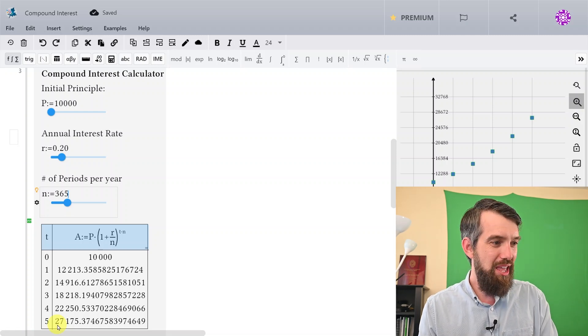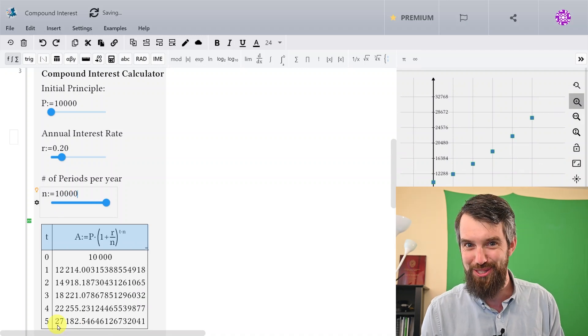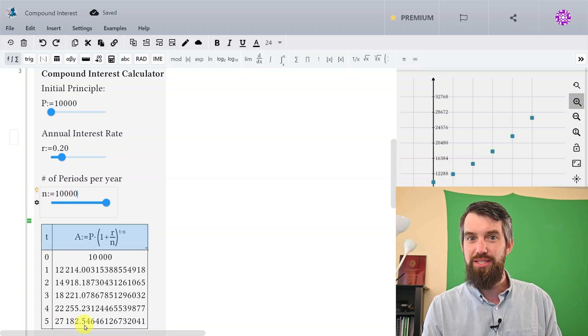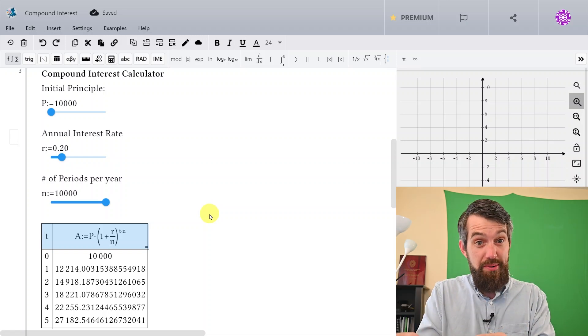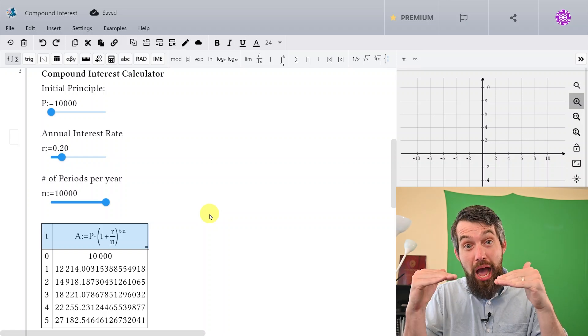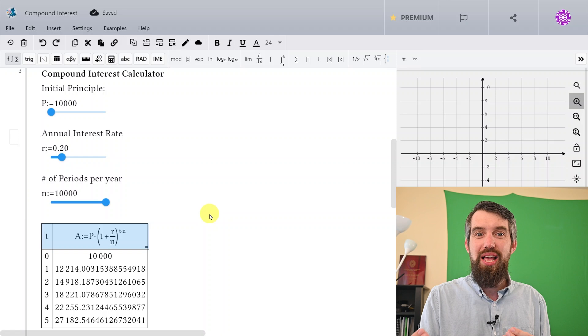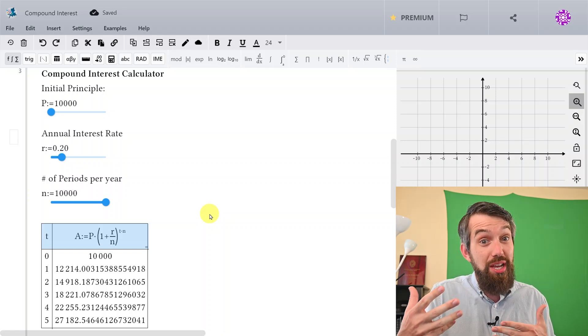And in fact, if you wanted to go kind of extreme and say, I don't know, how about 10,000 divisions per year, it actually barely changes the final value after 5 years. And the idea here is that as you increase the number of periods per year, the amount goes up, but it starts to slow down in how it goes up.